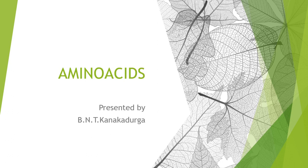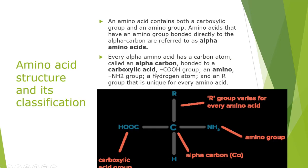What are amino acids? Amino acids are a group of organic compounds containing two functional groups — that is, the carboxylic group and the amino group. That's how we call them amino acids. The amino group is basic in nature and the carboxylic group is acidic in nature.